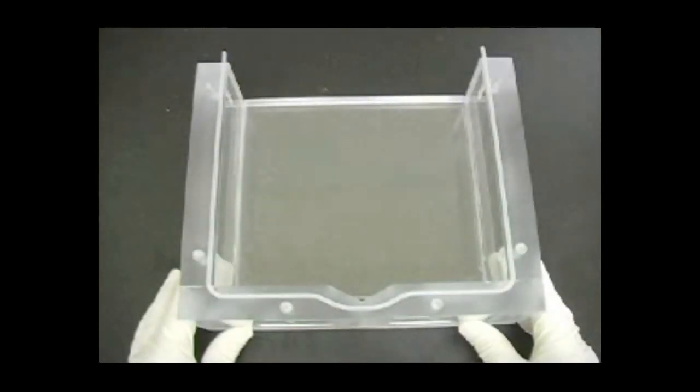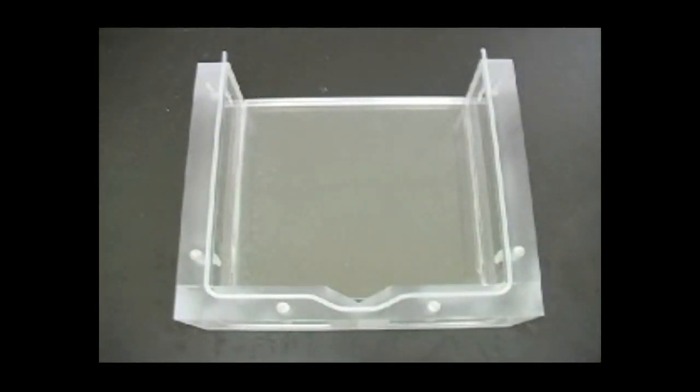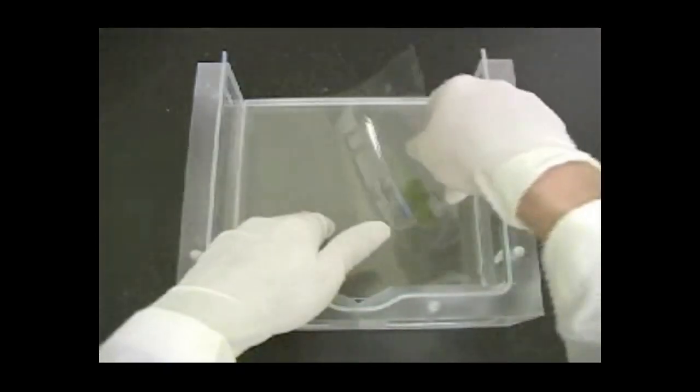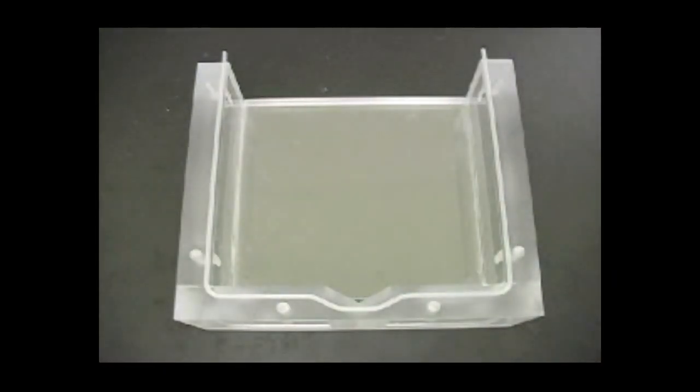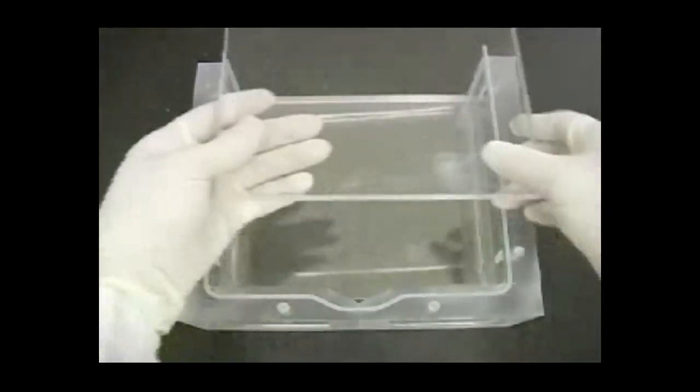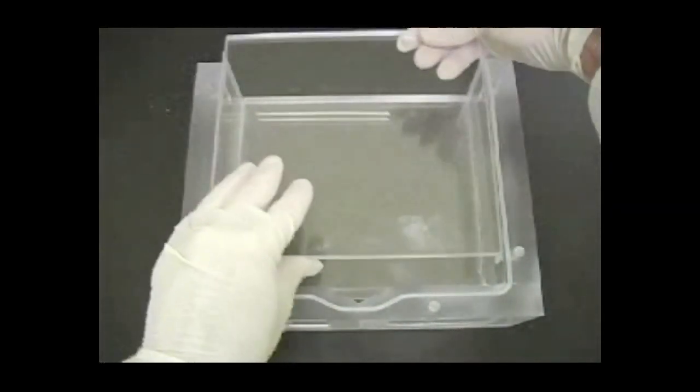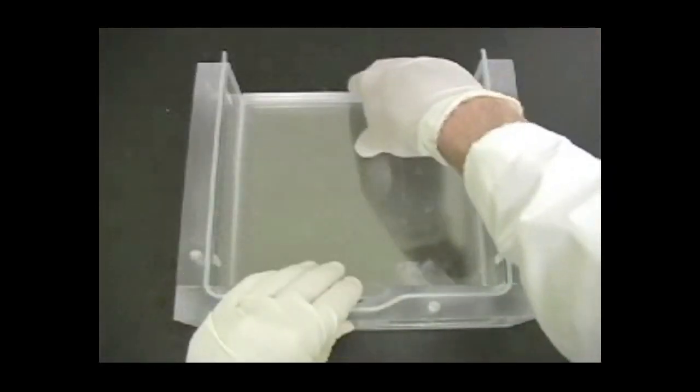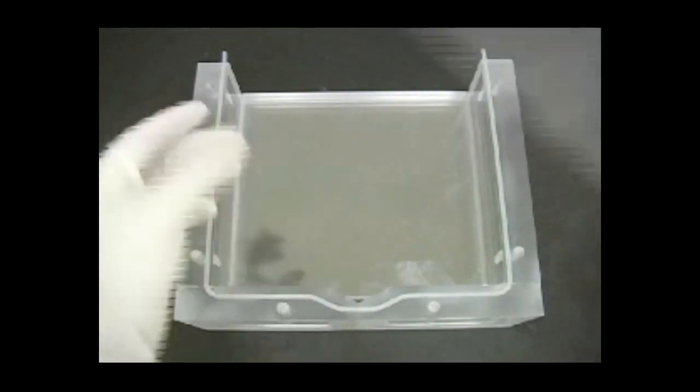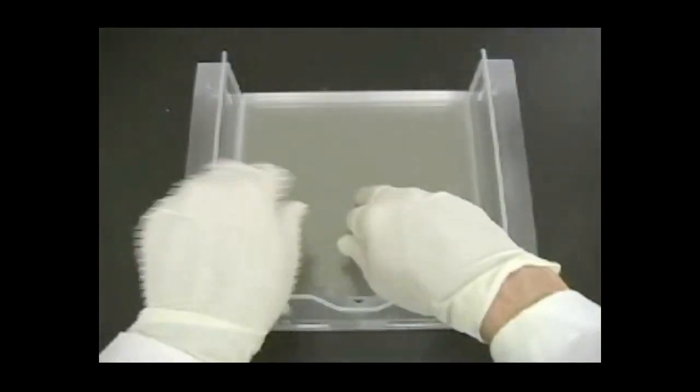Start by placing acrylic blocks into the chamber so that they seat at the bottom. Before placing your first Protein II XL glass plate, place a separation sheet on top of the acrylic block.